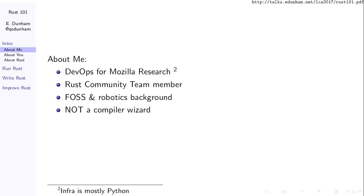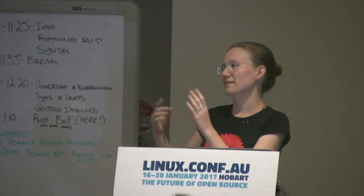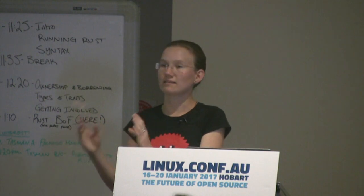I am Emily Dunham. I am the DevOps engineer for Mozilla Research, and I serve on the Rust community team as a volunteer. My background is in a bit of C, a bit of embedded development, mostly open source software and robotics. I'm not a particularly academic compiler person, so I teach Rust and approach tutorials from a very pragmatic "let's get this thing working" background, as opposed to a "here is a fantastic type system" perspective.